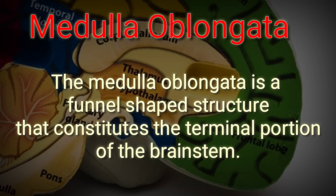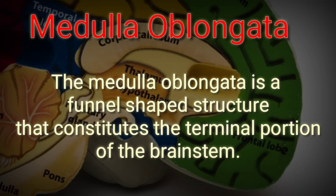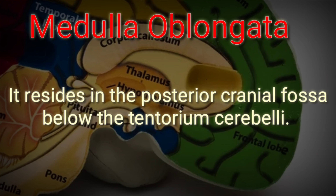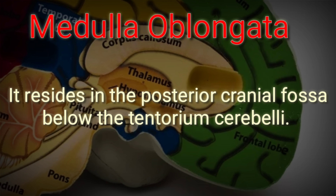The medulla oblongata is a funnel-shaped structure that constitutes the terminal portion of the brainstem. Regarding its location, it resides in the posterior cranial fossa below the tentorium cerebelli.